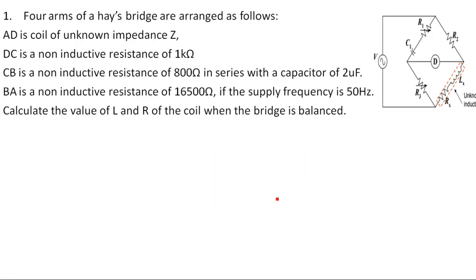Now coming to the second type of problem, I told you already, most of the times you may get this type of question. See, AD is a coil of unknown impedance Z, unknown impedance Z only. He is not asking whether it is consisting of inductance or capacitance. He didn't say, but at the last he said. And DC is a non-inductive resistance of 1 kilo ohm, and CB is a non-inductive resistance of 800 ohms in series with a capacitor of 2 microfarad. Here only you have to understand series capacitance value is given. And BA is a non-inductive resistance of 16.5 kilo ohms.